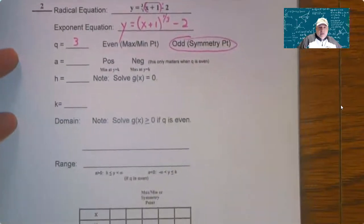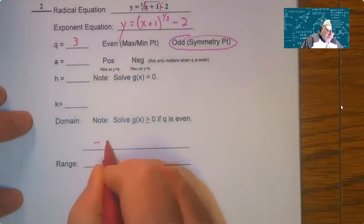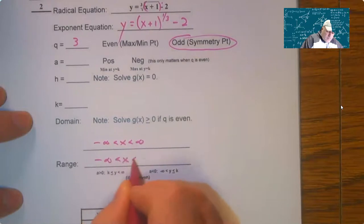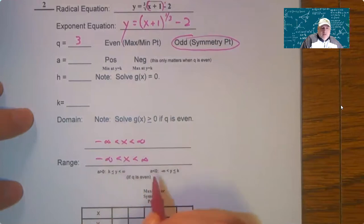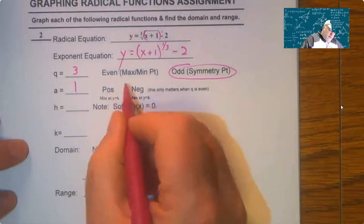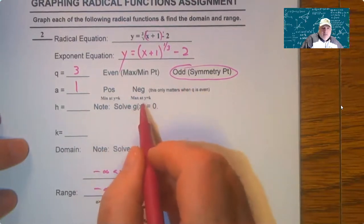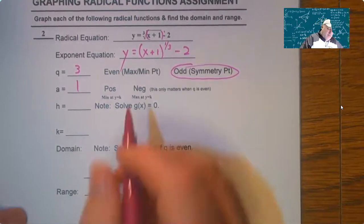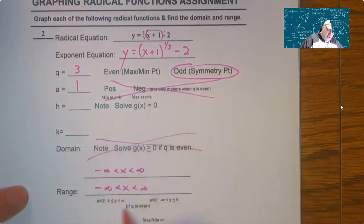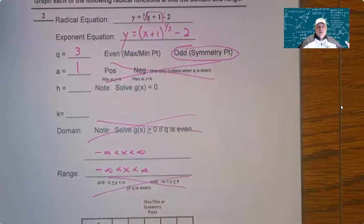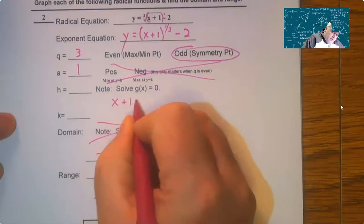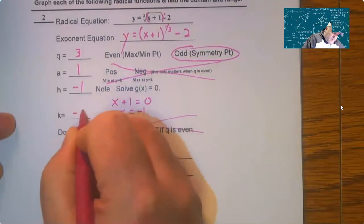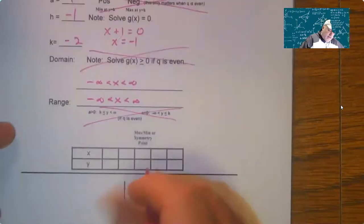So the fact that this is odd, meaning a symmetry point, the domain and range is just all reals. So however you want to write this, automatically you do this. So you only do the restrictions, the figuring of the domain, if Q is even. And then the A is one and it's positive. Now you only worry about these two only when Q is even. So there's not a min or a max, it's a symmetry point. So this does not come into play at all when Q is odd. When Q is odd, it's very simple to do. You always have to solve the g(x) equal to zero, so we get negative one. And then K is whatever is added on the end there. So negative one, negative two is the symmetry point.